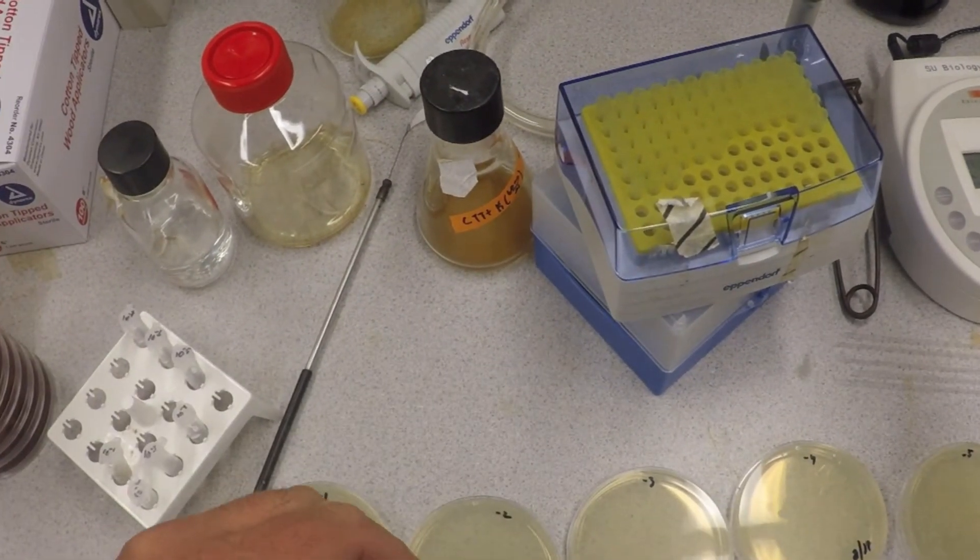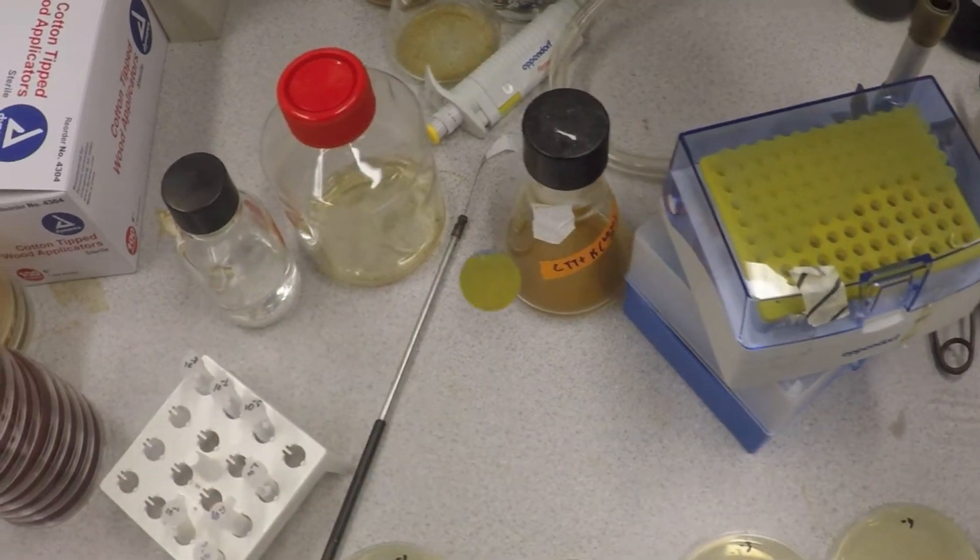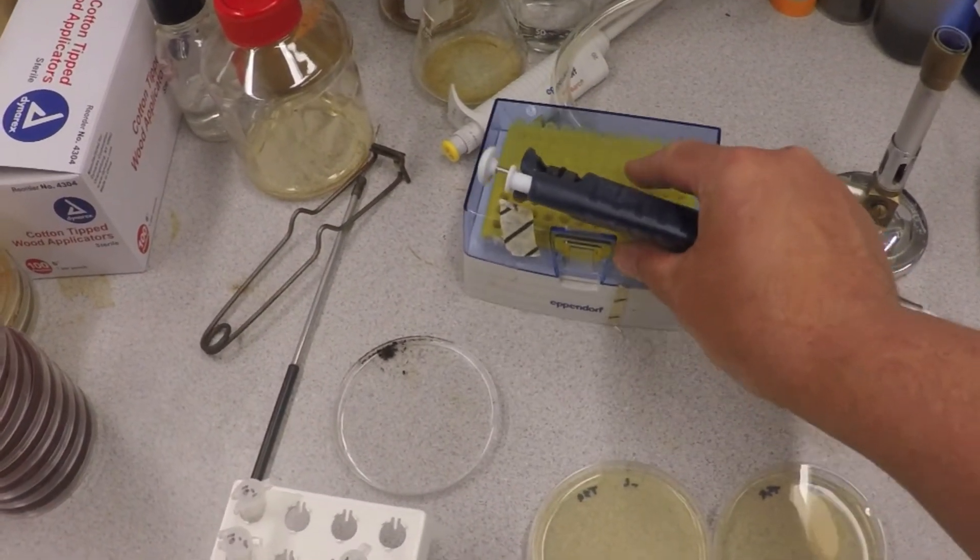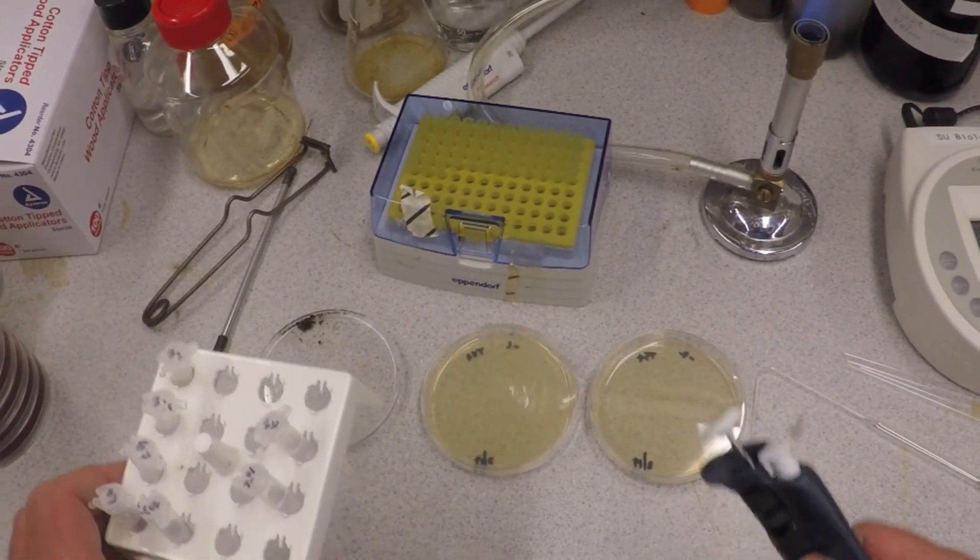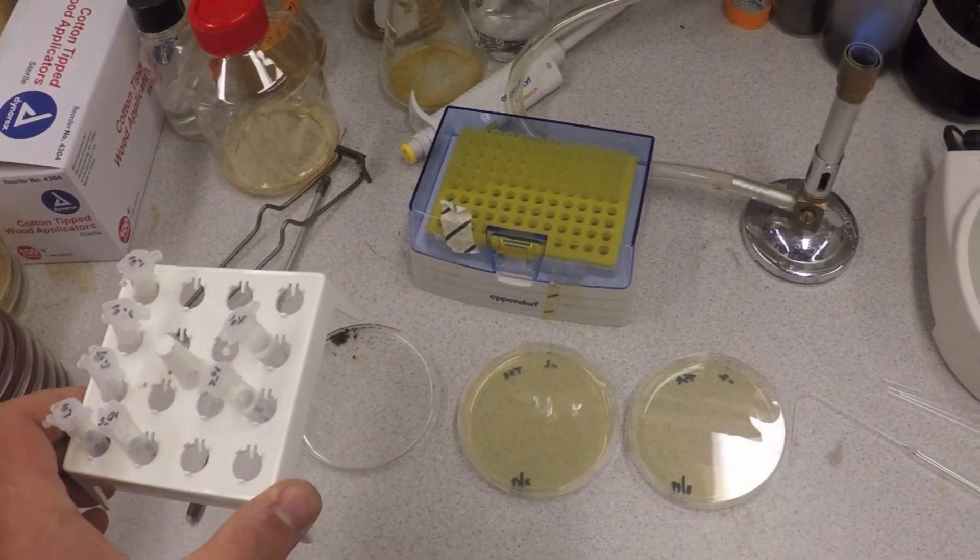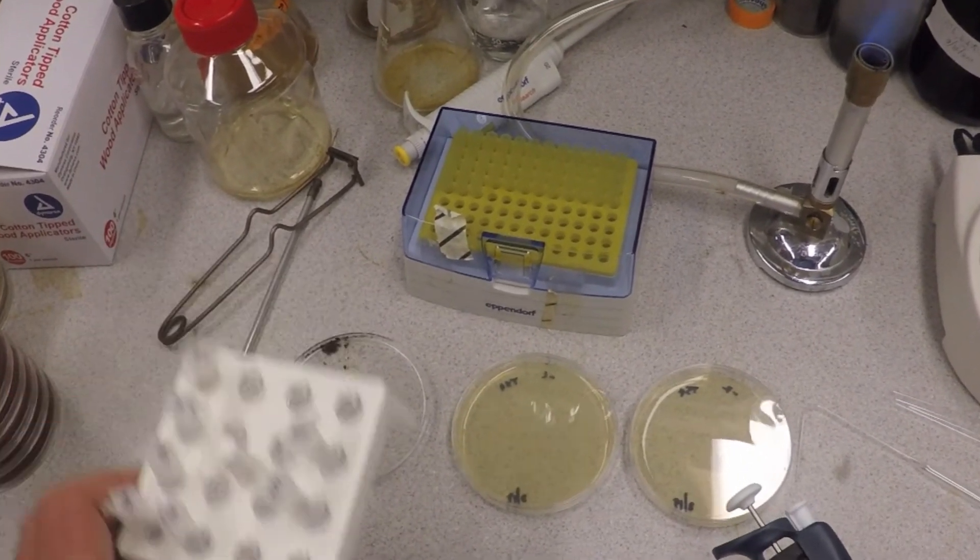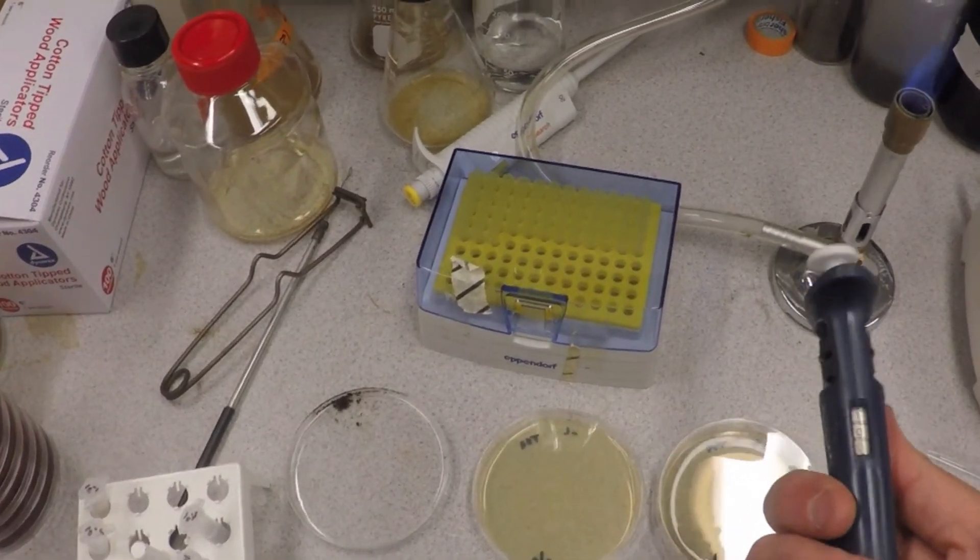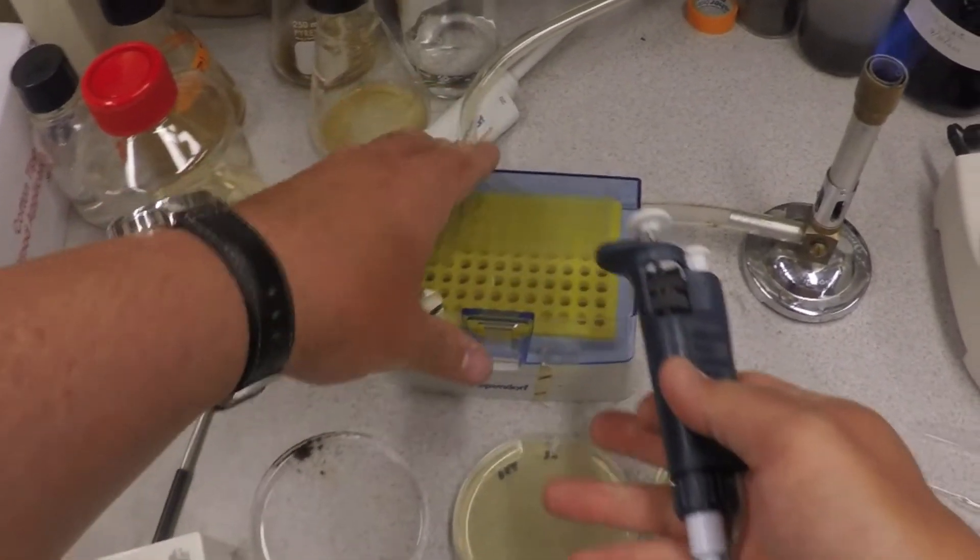Made your dilutions. Now once those dilutions are made, you need to plate these in volumes onto your plates and spread them out to count colonies. So what do you do? You take 100 microliters from your dilutions.